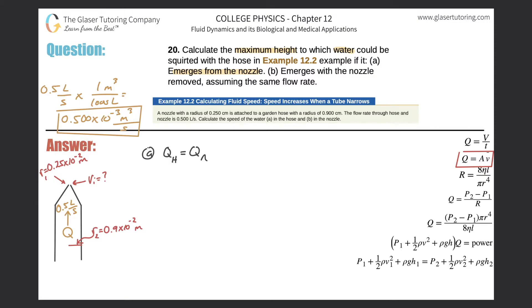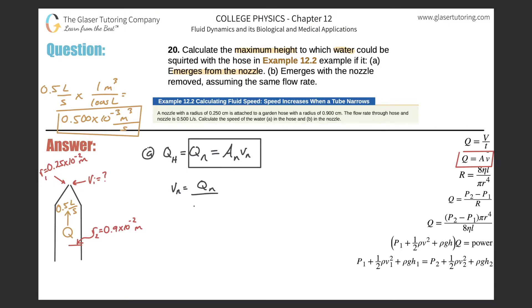We can also write Q_nozzle = A_nozzle × v_nozzle. We know Q through the hose equals Q through the nozzle, so solving for velocity: v_nozzle = Q_nozzle / A_nozzle. Since the nozzle is circular, A = π·r², so v_nozzle = Q_n / (π·r_n²).